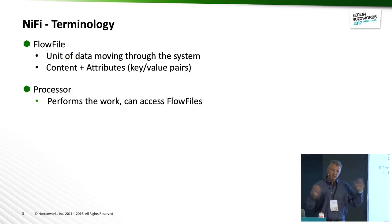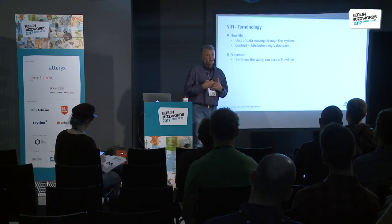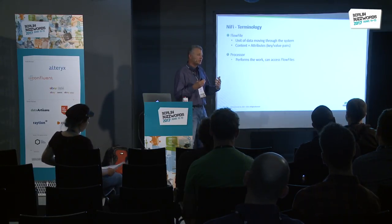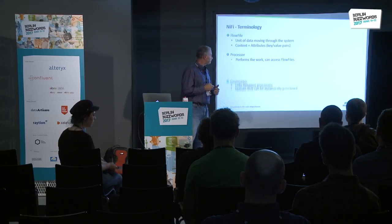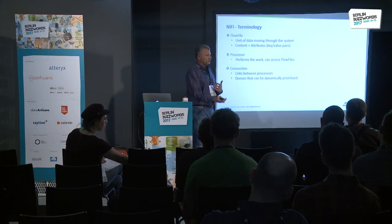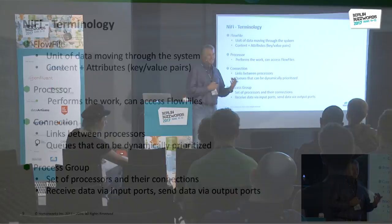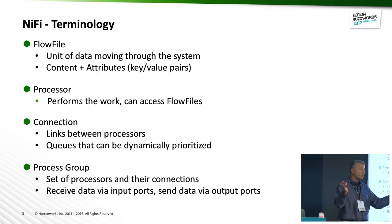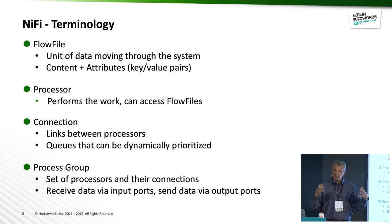A processor is anything you could use to ingress, manipulate, or egress data. Anything that takes action is a processor. You have a connection between processors, where you set things like prioritization and different types of back pressure. Then you have a process group, which allows you to visually simplify and group things together — otherwise you end up with a horse blanket of everything all over the place. Process groups let you think of a flow section as a component.